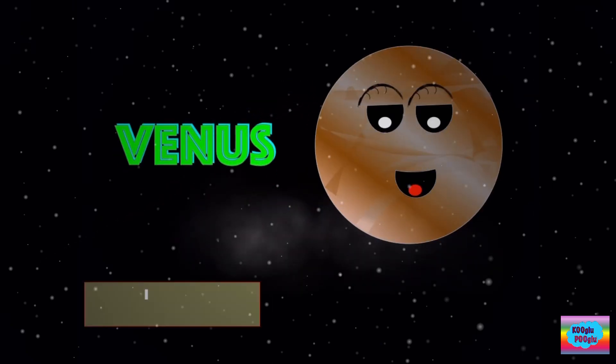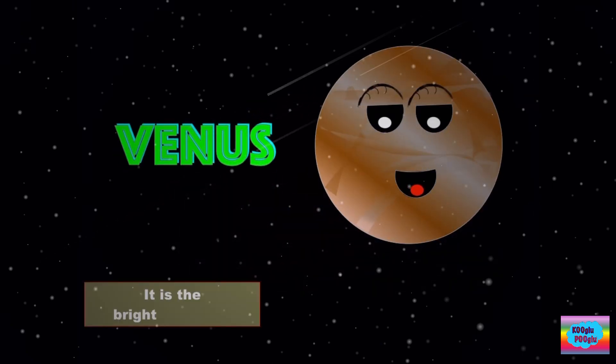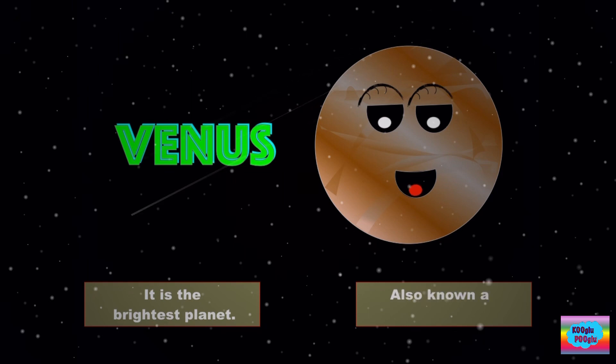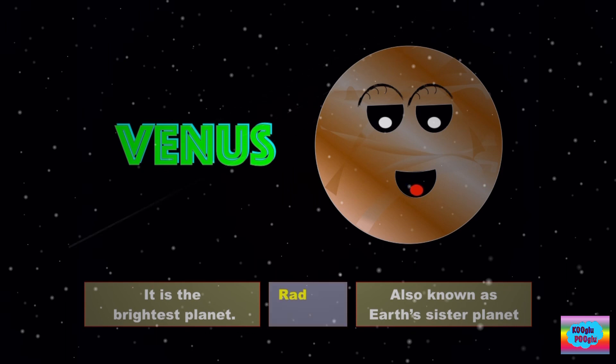Let's go on to our third planet, which is Venus. It is the brightest planet. I am so bright. Also known as Earth's sister planet. I'm the sister of Earth. The radius is 6,052 kilometers.